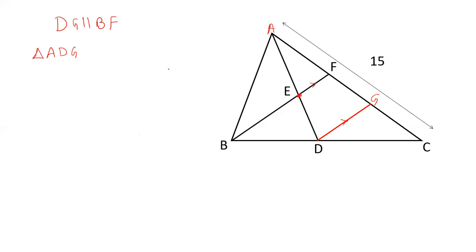There is a rule, or we can say a theorem, which is known as midpoint theorem. The theorem is that a line drawn from the midpoint of a side of a triangle parallel to the second side bisects the third side.